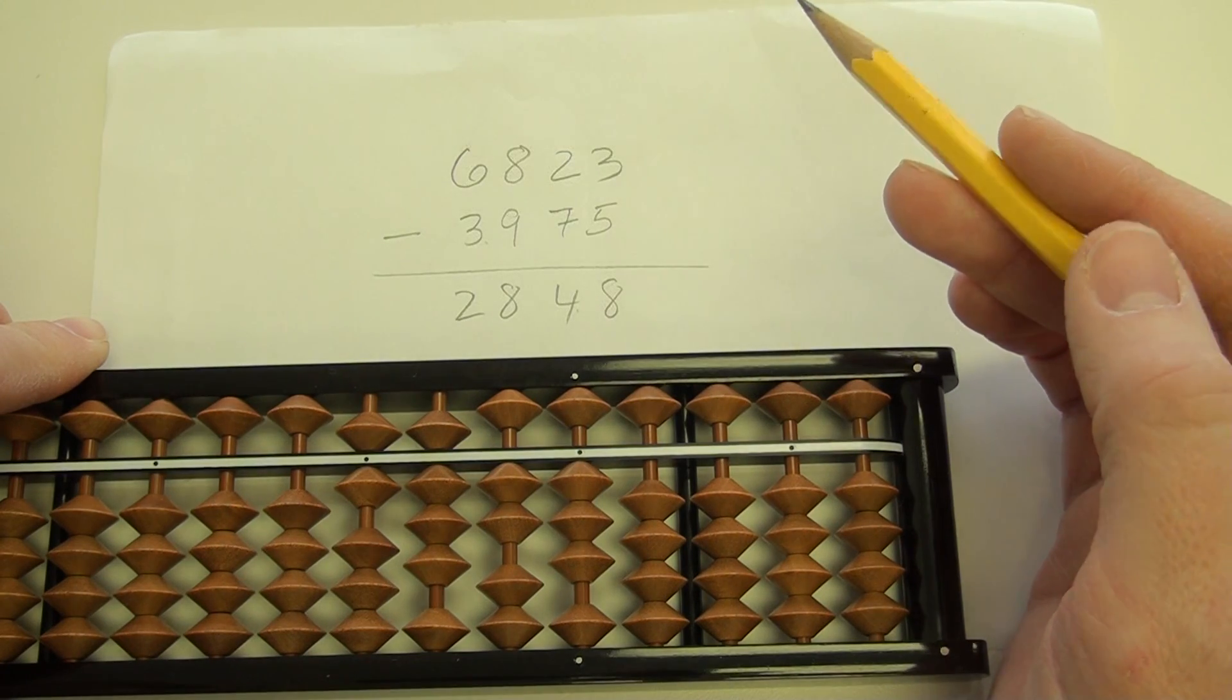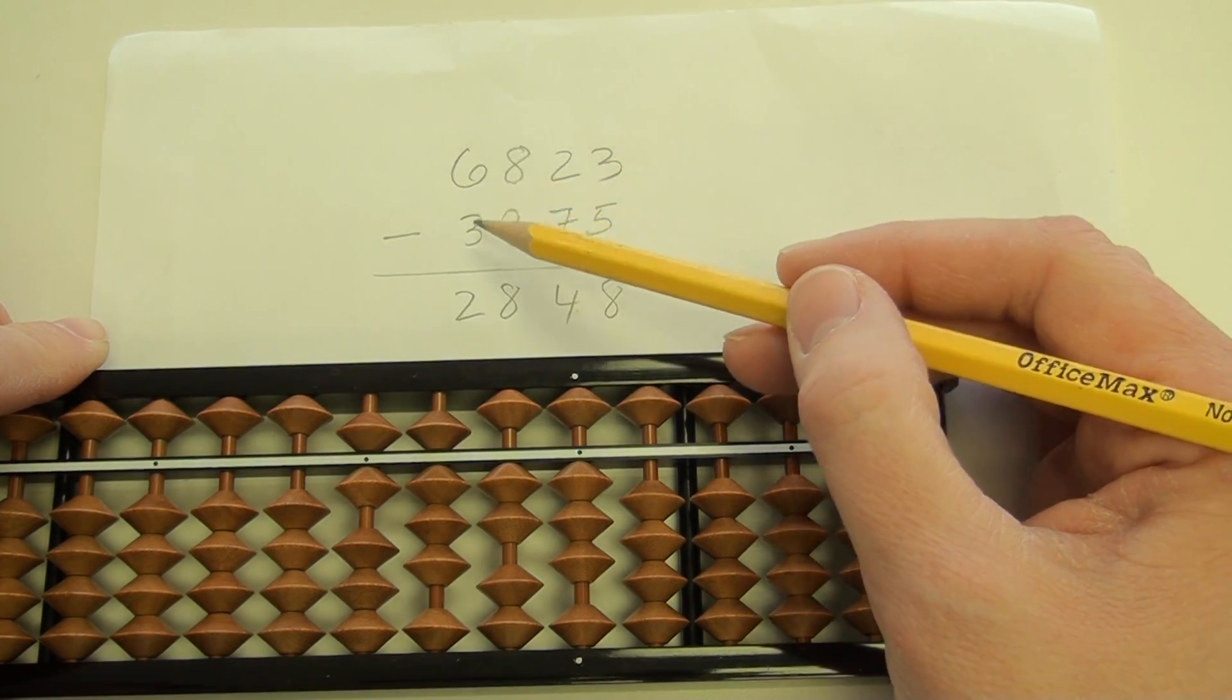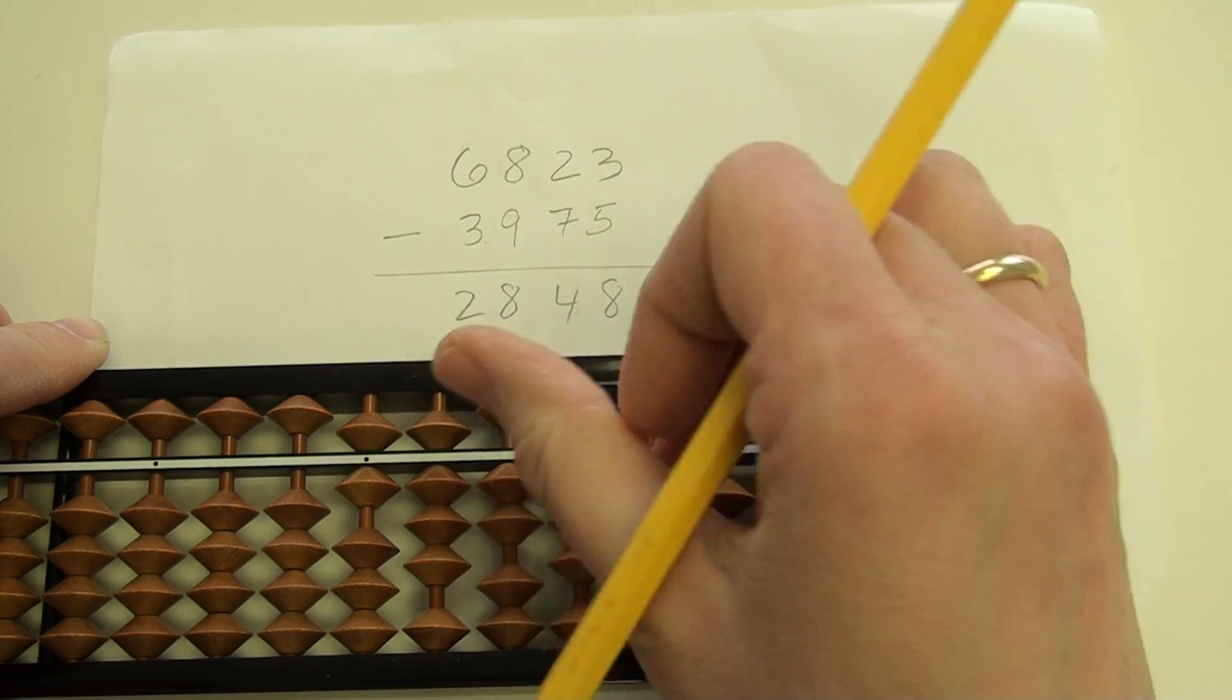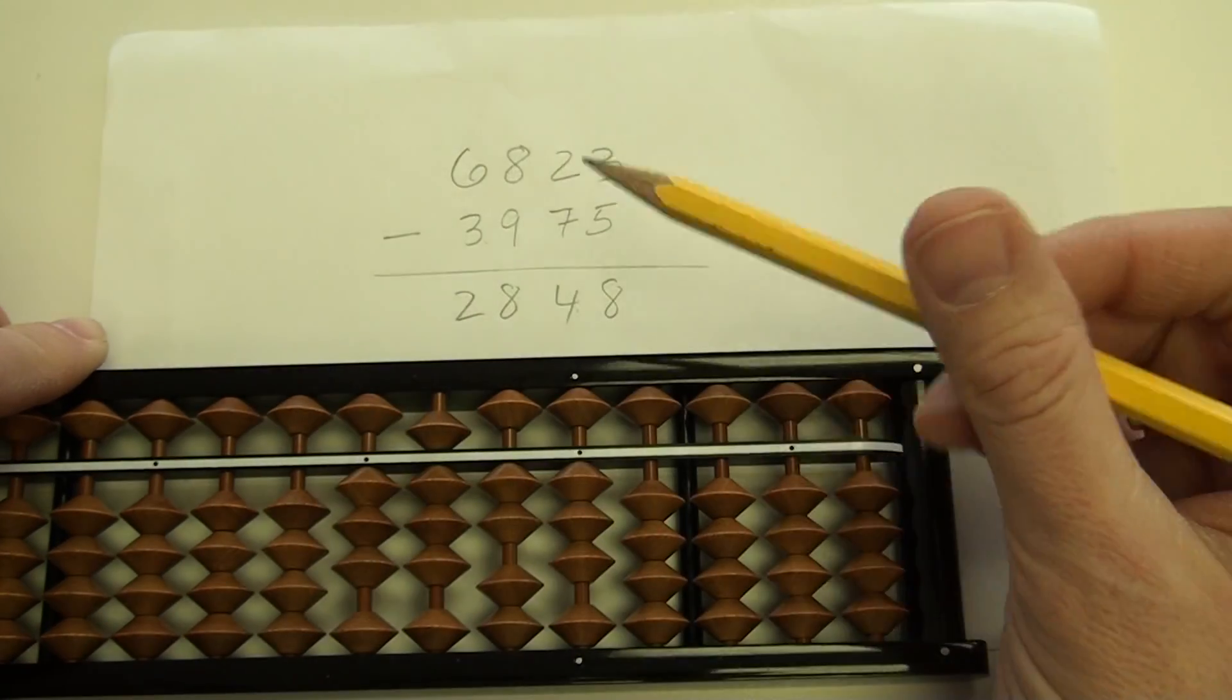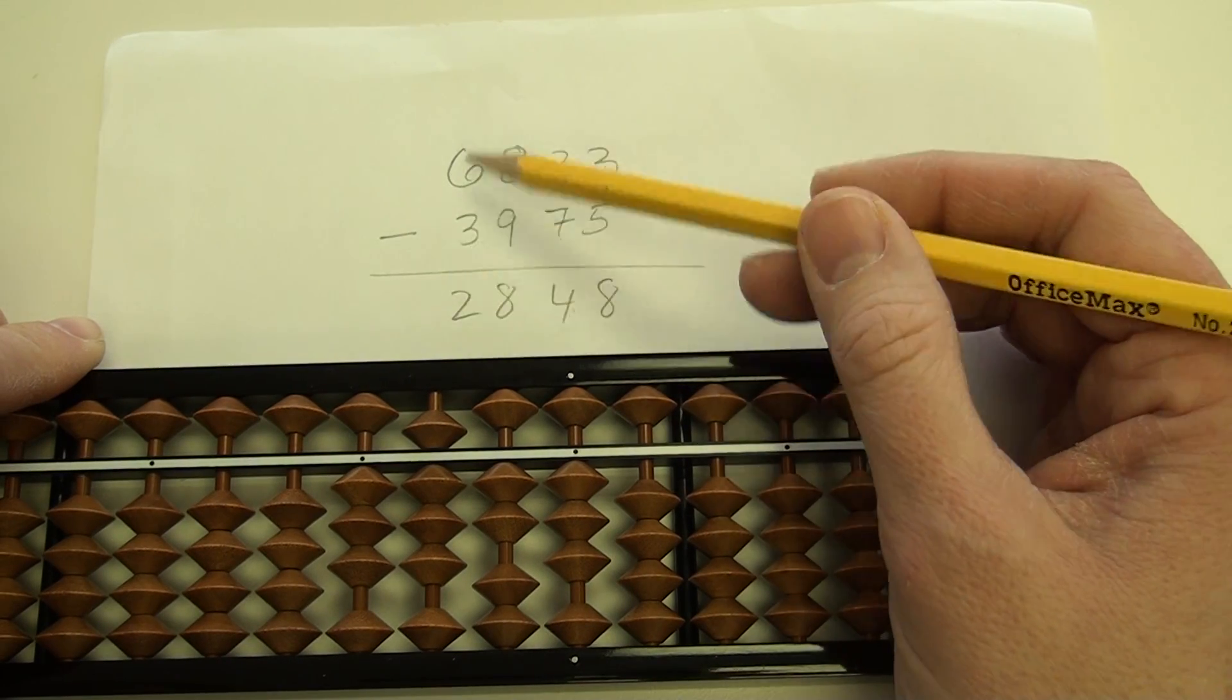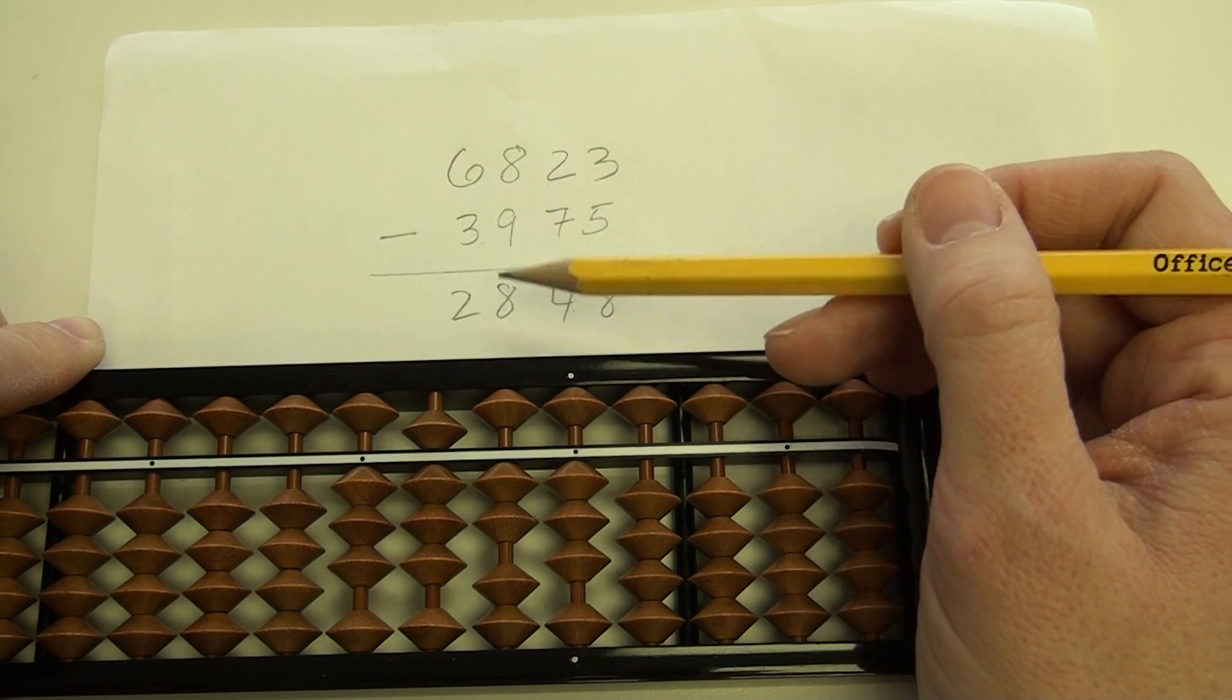So I have to think about, I'm going to use my 5's complement. To take away 3, that is equivalent to taking away 5 and adding 2. So I'm going to take away 5 and add 2. So I've performed this first subtraction here working left to right in the 1,000th place.